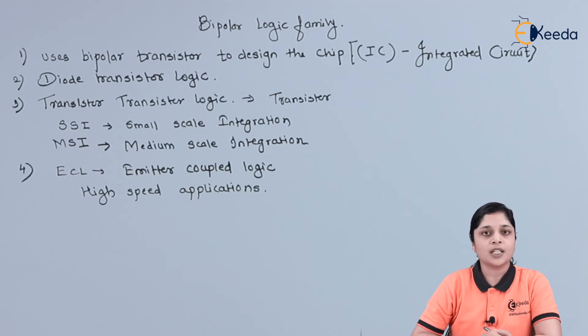In unsaturated Bipolar Logic families, the transistors are not driven into the saturation region. We have Schottky transistor-transistor logic and ECL. If you see the Schottky transistor-transistor logic, they are not driven into the saturation regions, because of that speed of operation increases.